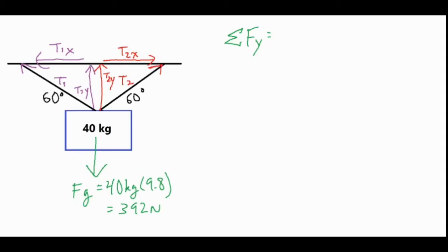For analyzing the vertical components, we have two going upwards, so T1y positive and T2y positive. Then subtract the force of gravity going downwards, and you'll have no force because our object is at rest. We know that because the angles are the same, these two values are the same.